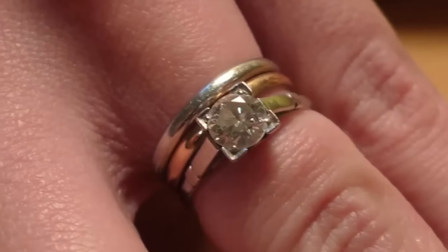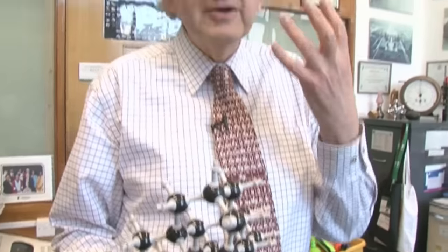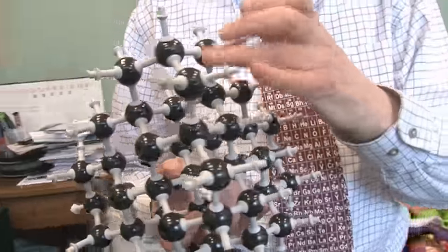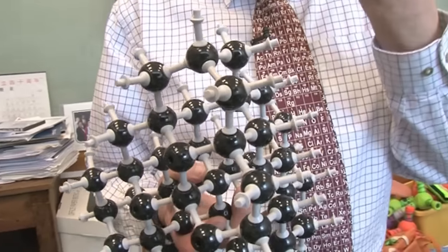Diamonds are colourless, and to understand why, you have to understand what gives rise to colour. And the colour of anything are caused by electrons in the molecules or material, and they absorb energy and go from one level to another. In diamond, there are bonds between all the carbon atoms that use all the electrons. The electrons are very tightly bound and none of them can change their energy state, so you get no absorption, at least in the visible region of the spectrum.